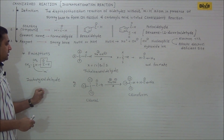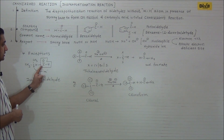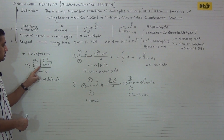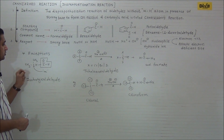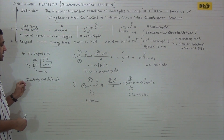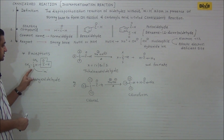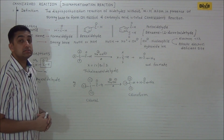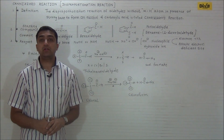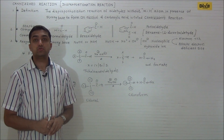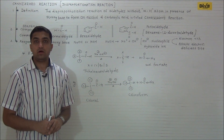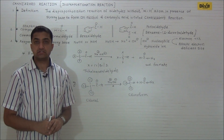Let us discuss a few exceptions to Cannizzaro reaction. Consider isobutyraldehyde — this is the formyl group, and the alpha carbon to which the functional group is directly attached clearly contains hydrogen atoms. Still, isobutyraldehyde shows Cannizzaro reaction and will not undergo aldol condensation.